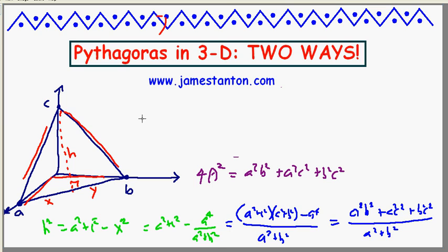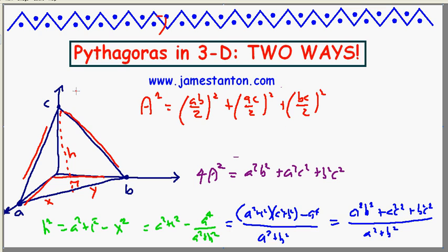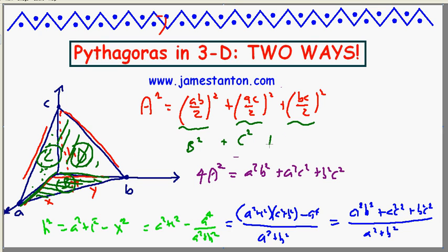And I love this because I have a geometric interpretation for each of these terms. Half times a times b is the area of the bottom triangle — let me call that area B. Half times a times c is the area of the side triangle — call that area C. And half times b times c is the area of the other face — call that area D. So De Gua discovered that the area of the sloping triangle squared equals the sum of the squares of the areas of its three side triangles.